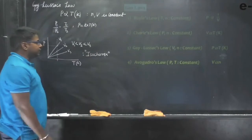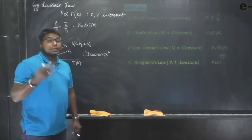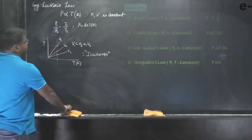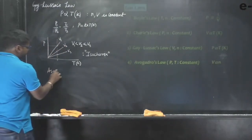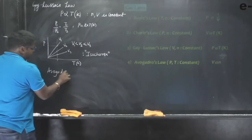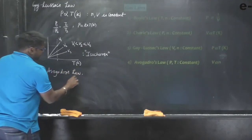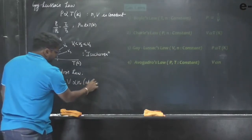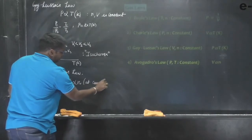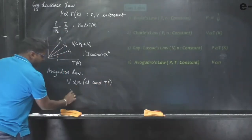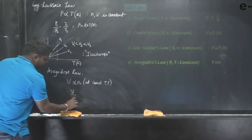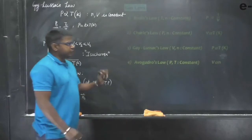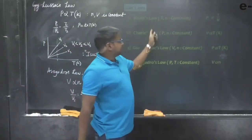I hope all of you understand what isotherms, isobars, and isochores are. That is about Gay-Lussac's law. The last one is Avogadro's law, which tells us that volume is directly proportional to number of moles at constant temperature and pressure. We can write V1/V2 = N1/N2. That should be sufficient to understand these gas laws.